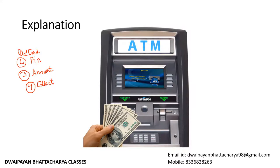You see, there is a sequence — a particular order. First you insert the card, then the machine asks for the PIN, you enter the PIN, then the machine asks for the amount. Suppose you enter 10,000 rupees but there is not enough balance — the machine will deny that amount. If the request is valid, then you can collect the cash. So there is a clear process sequence.